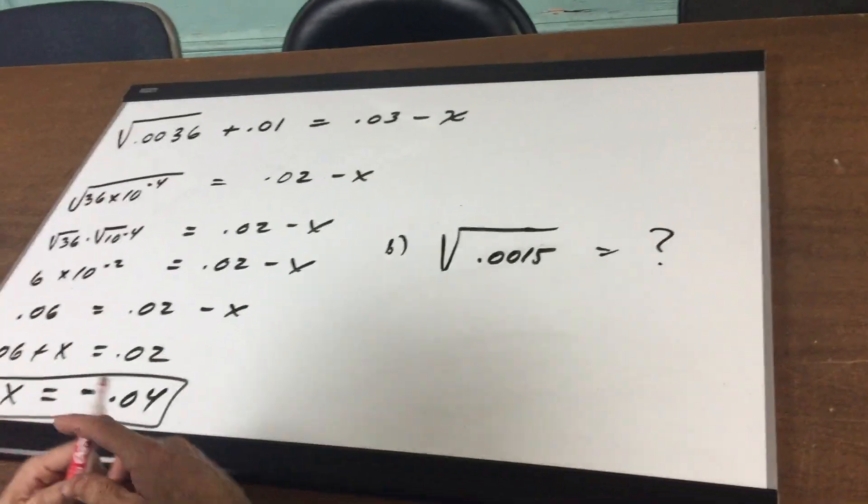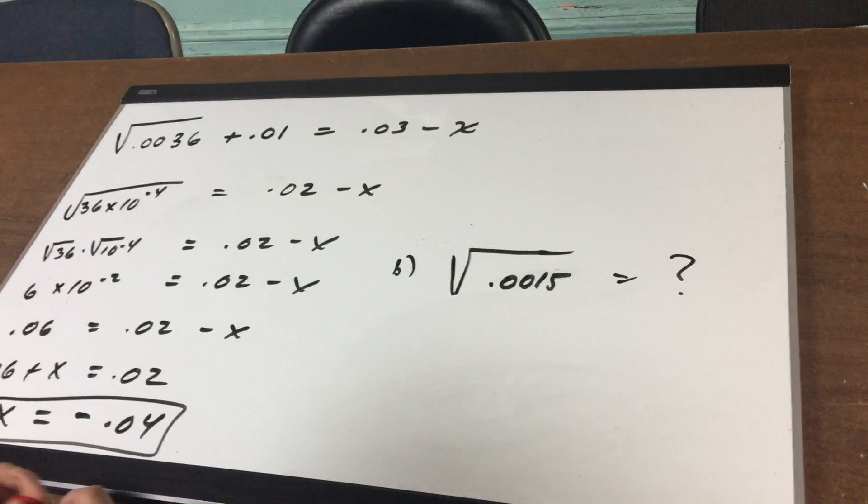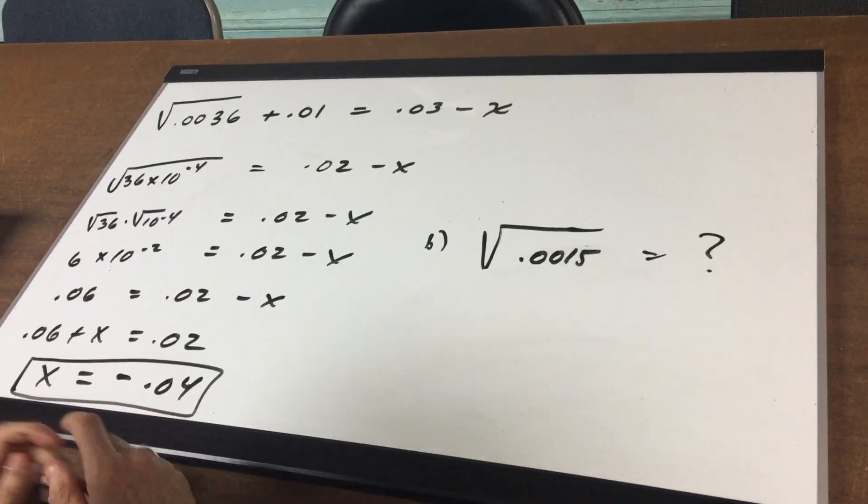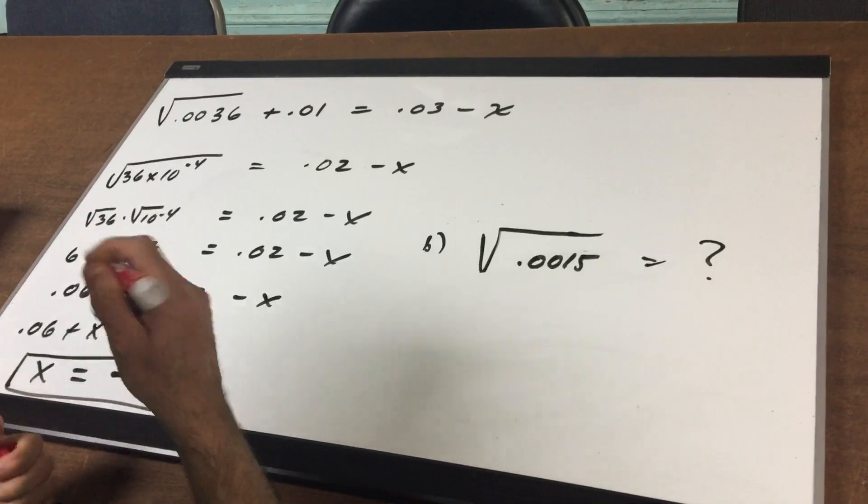So come around. First thing I want to do here is to evaluate the square root of 0.0036 plus 0.01 equals 0.03 minus X. The best way to do a problem like this is to rewrite the square root of 0.0036 as the square root of 36 times 10 to the minus 4th.